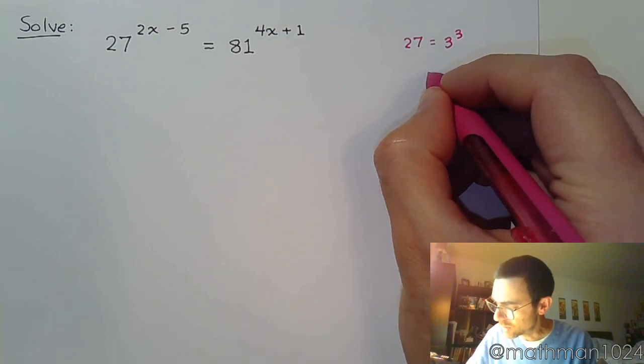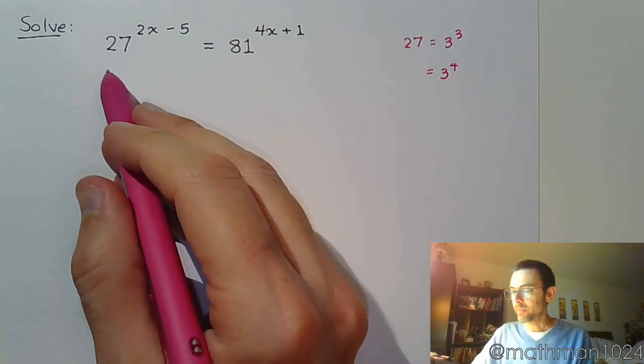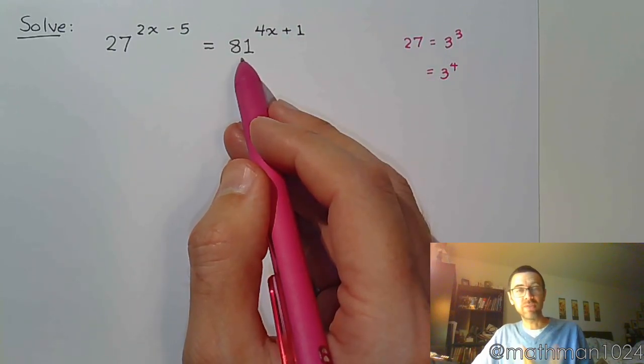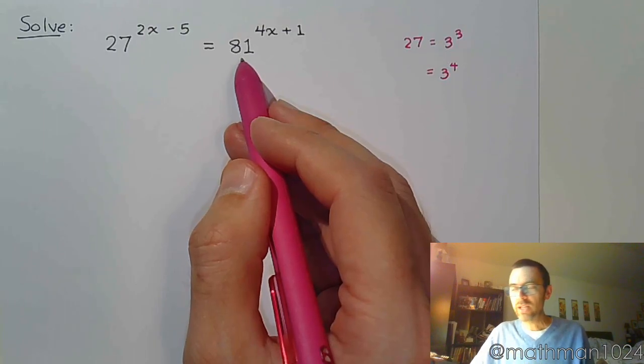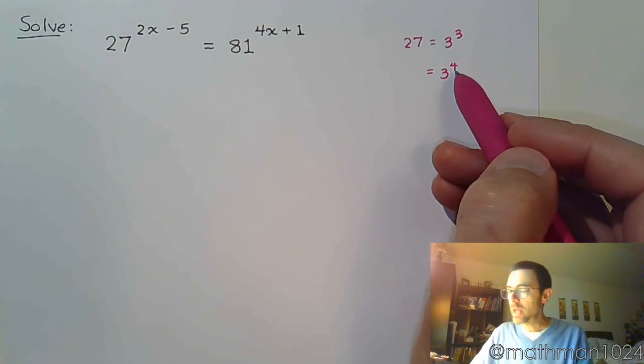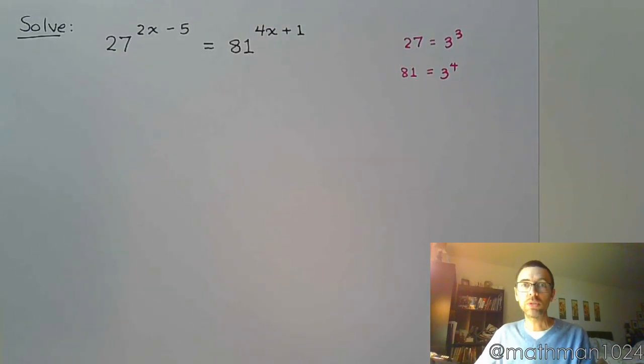Okay, well, if that's 3 to the 3rd, what would 3 to the 4th be? Because if you're trying to find 81, does it have a base of 3? It's got to be more than 3 to the 3rd. So if you look at 3 to the 4th, and you look at your power sheet, you're going to find out that that's 81. So these guys have a common base of 3.